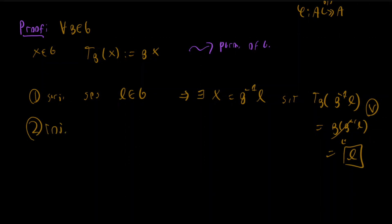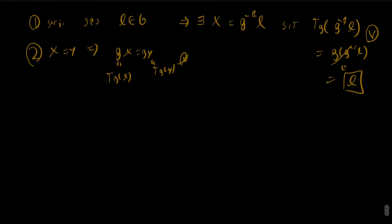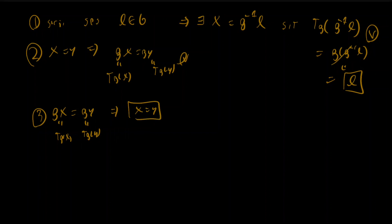For well-definedness: if x = y, then g·x = g·y, i.e., T_g(x) = T_g(y). For injectivity: if T_g(x) = T_g(y), meaning g·x = g·y, then by left cancellation in groups we get x = y. So T_g is a bijection, and therefore T_g is a permutation on the set G.